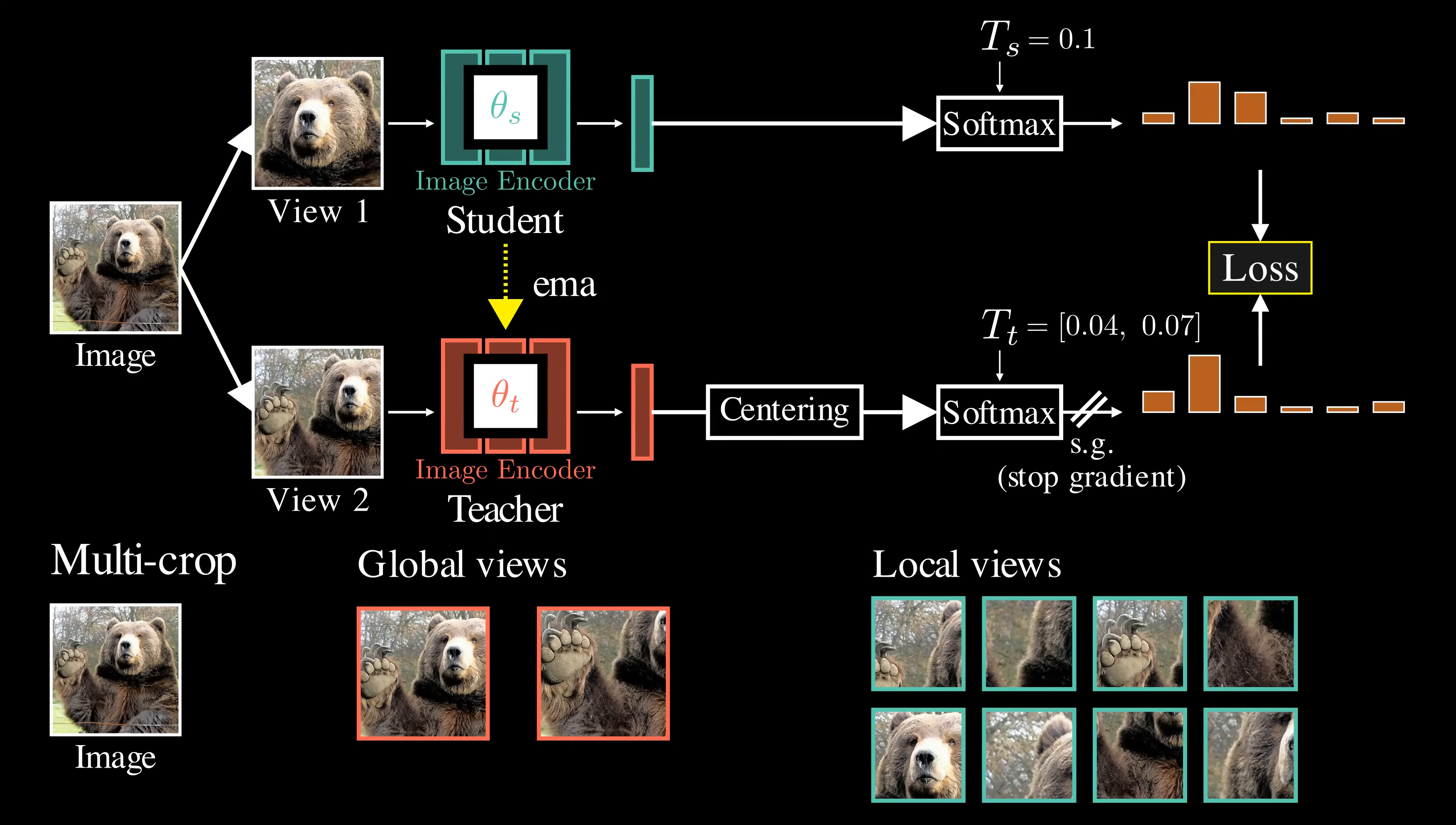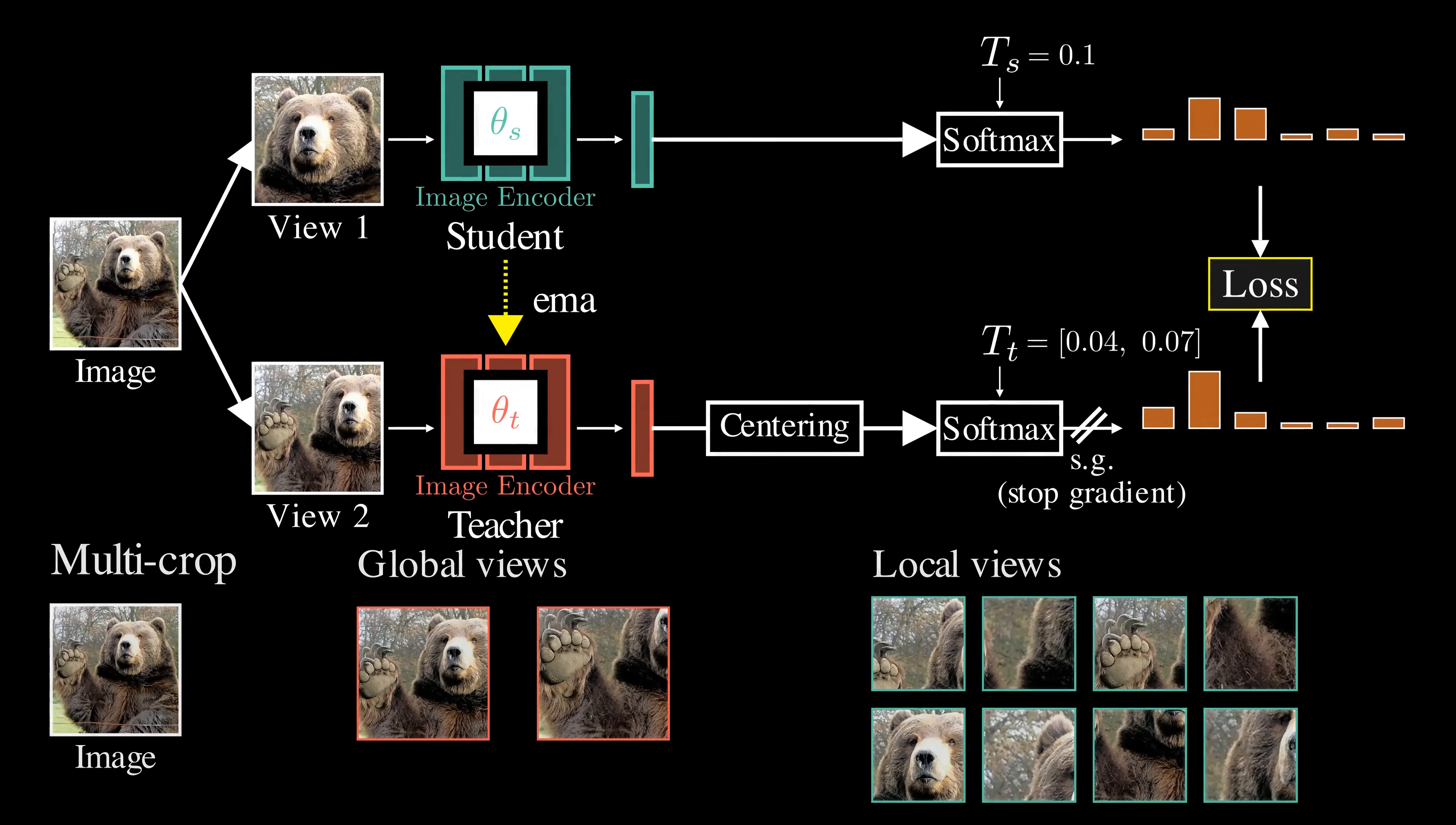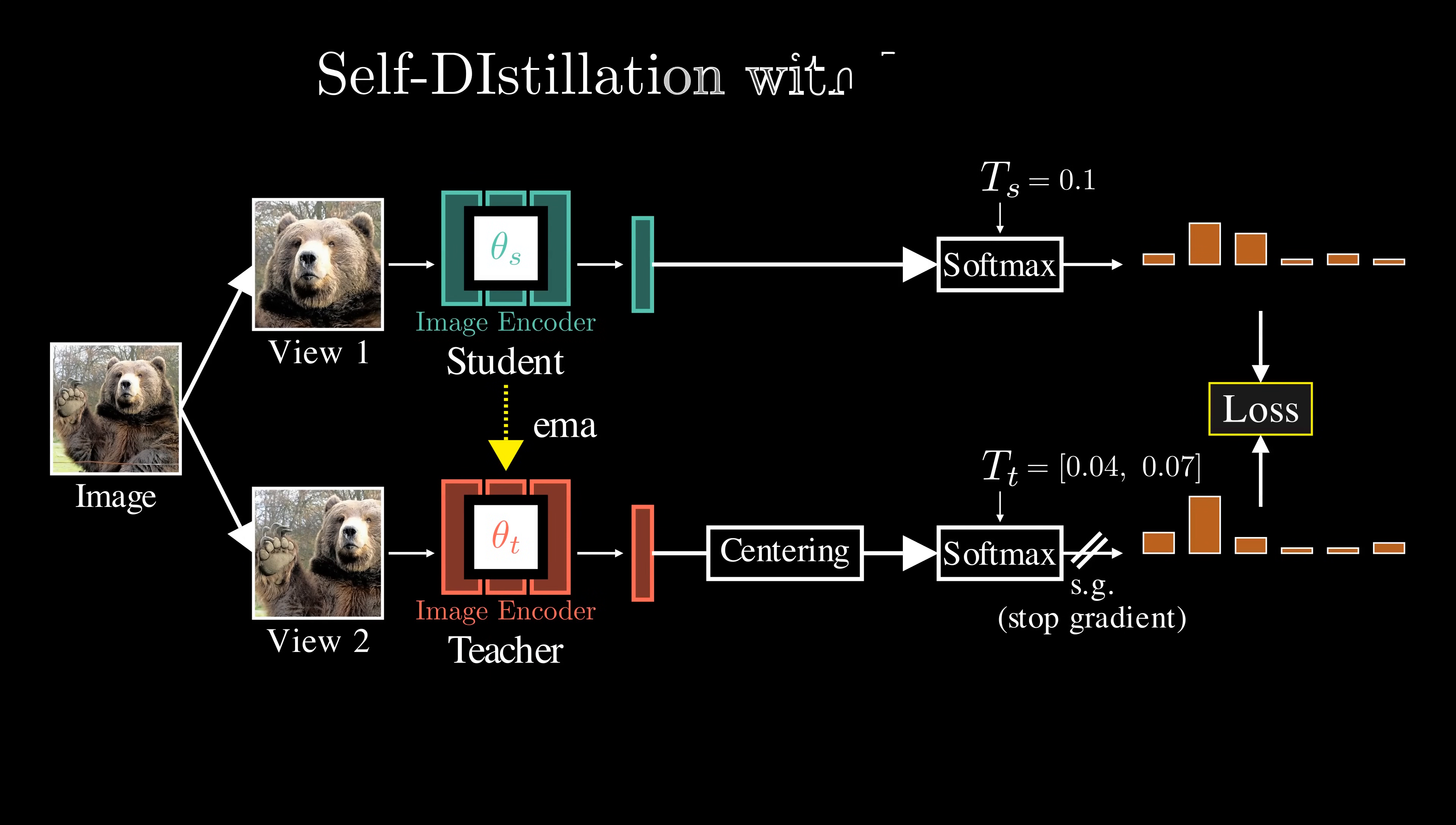By using this strategy, the model learns to associate detailed information from small, local patches with the broader context provided by the global views. As a result, the model becomes better at recognizing objects and patterns, even when only small parts of images are visible. This method is known as self-distillation without labels, or DINO.